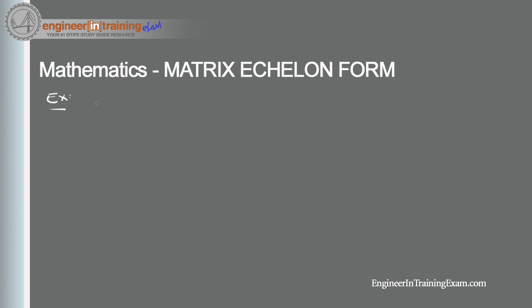That's a lot of verbiage, so let's illustrate through an example. Let's say we have the matrix: [0, 1, 2; 1, 2, 1; 2, 7, 8]. We'll first reduce it to row echelon form and then to reduced row echelon form. The first step is to find the pivot — the first non-zero entry in the first column — which is 1.